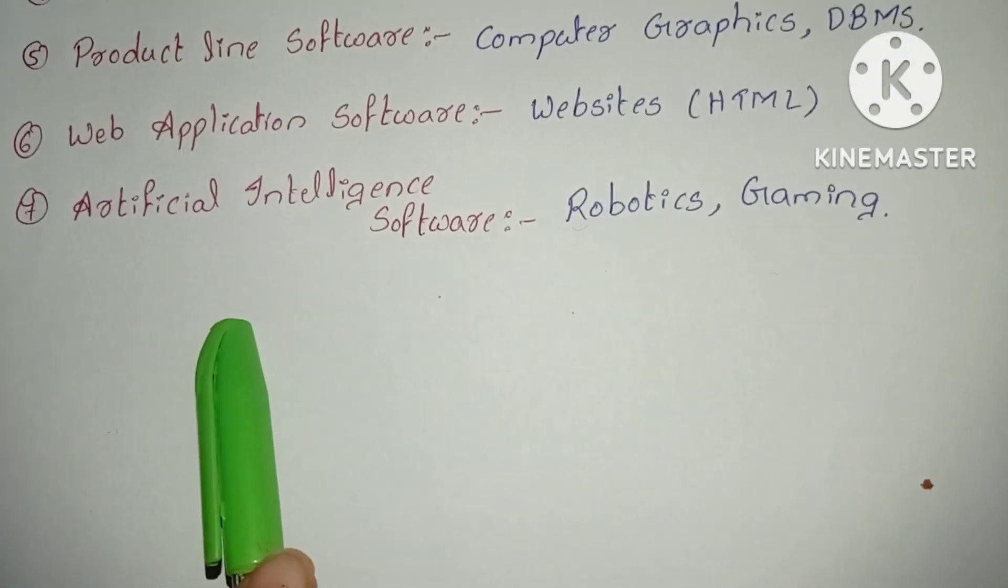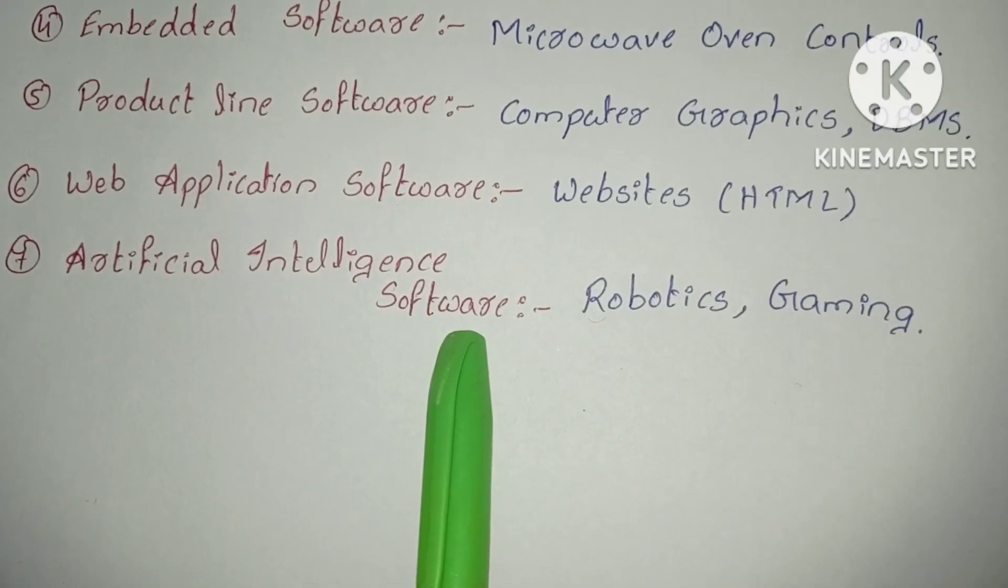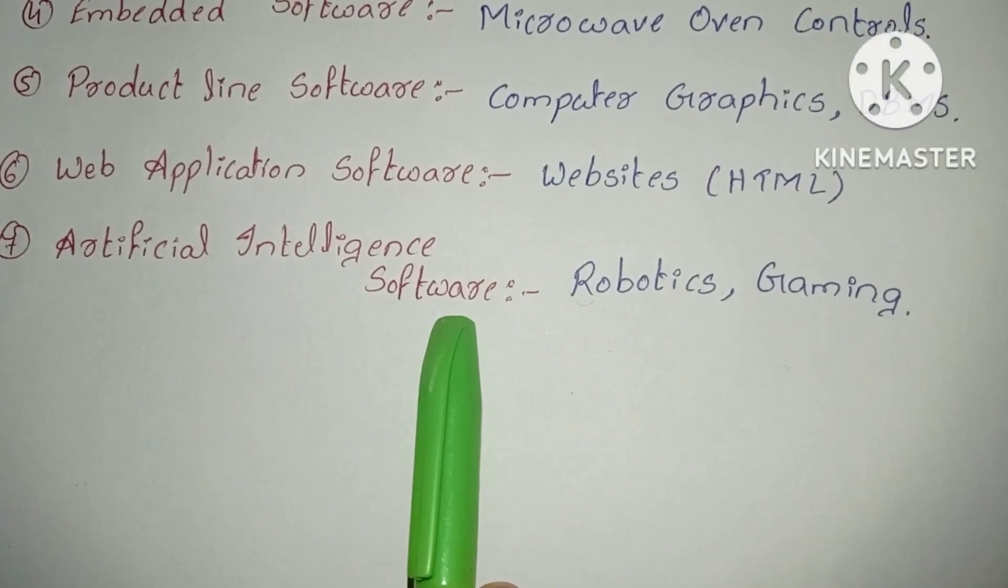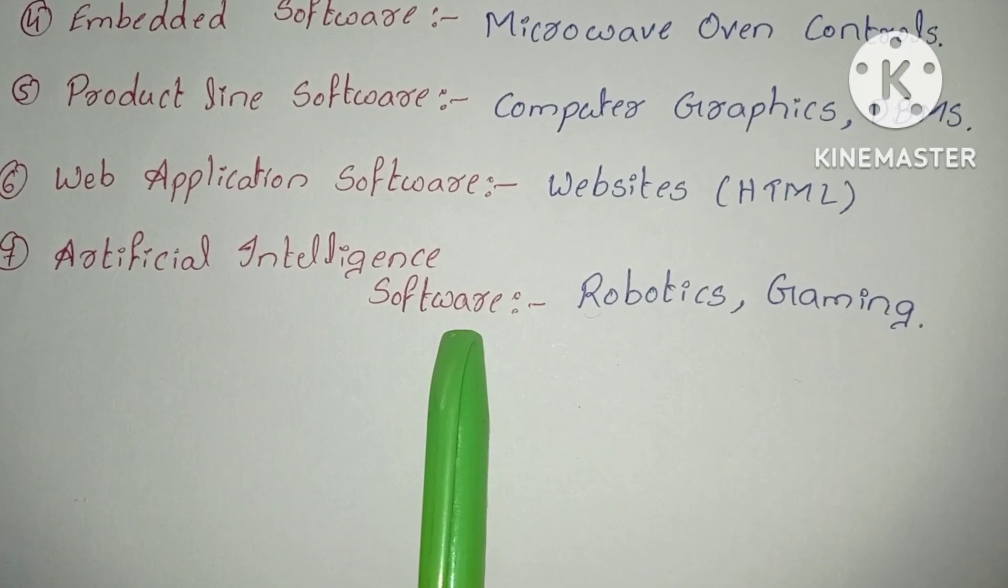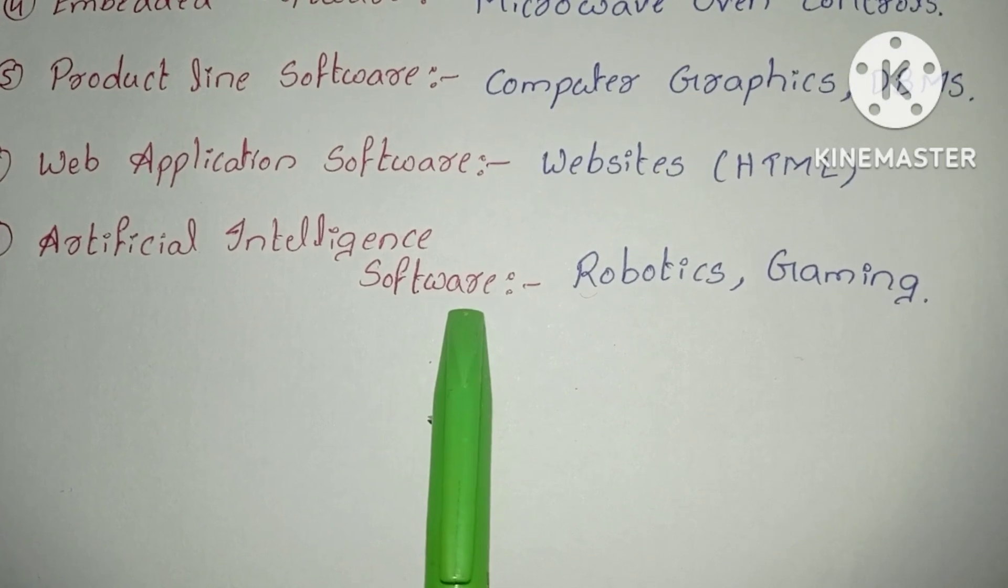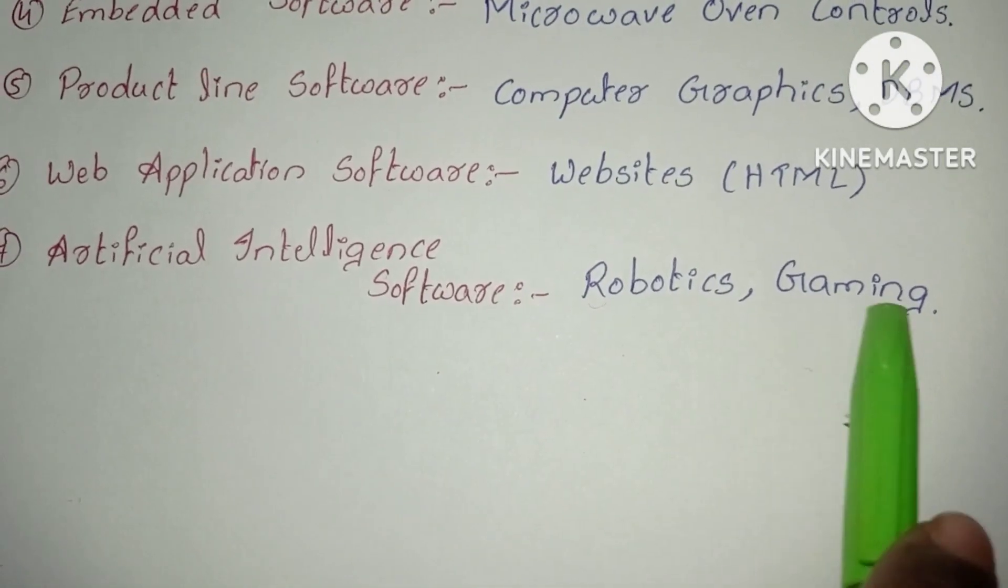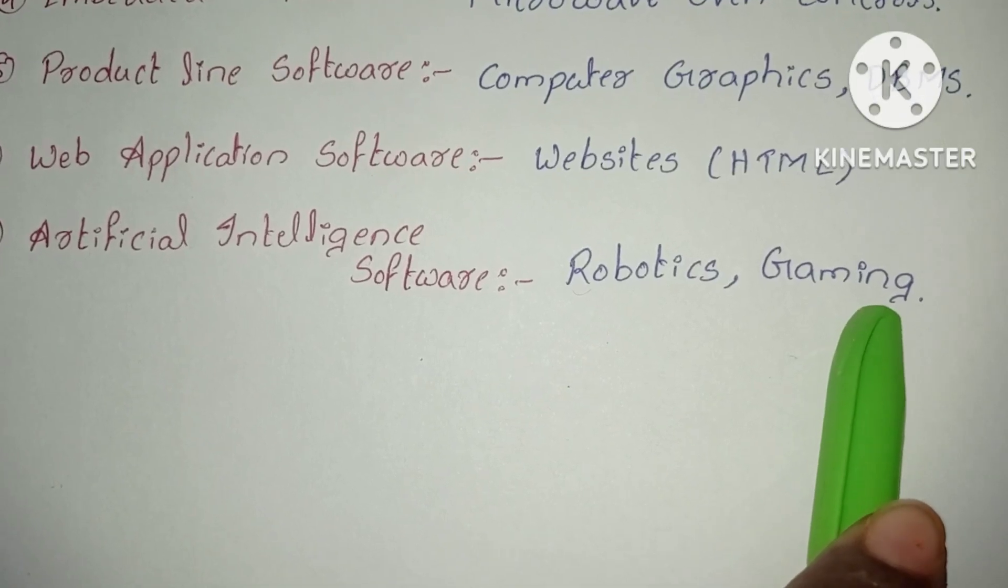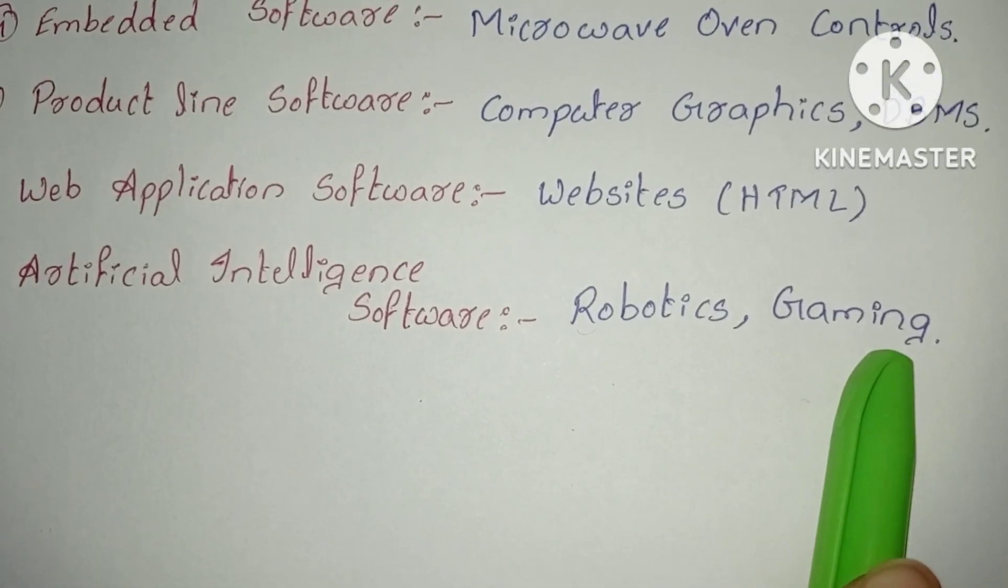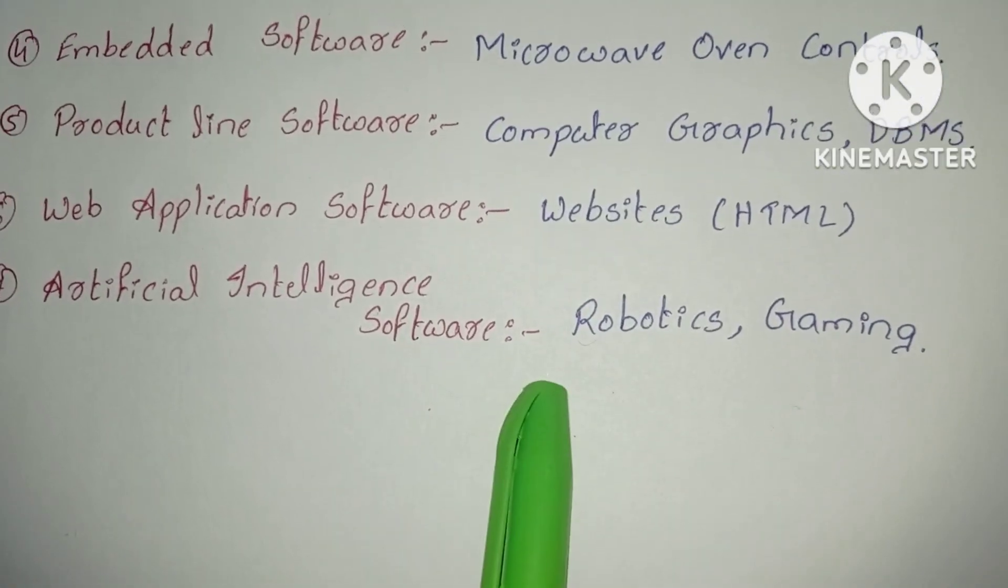The last one is artificial intelligence software. Artificial intelligence software is used for non-numeric algorithms to solve complex problems. Nowadays all are using this AI software in robotics and implementing gaming softwares. All gaming softwares are developed using this artificial intelligence software.